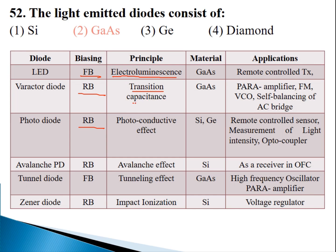Varactor diode works on transition capacitance and uses gallium arsenide. Photodiode operates on the photoconductive effect — converting light energy to electrical energy, which is the opposite of LED — and uses silicon or germanium. Avalanche photodiode uses the avalanche effect, made of silicon. Tunnel diode works on the tunneling effect, made of gallium arsenide. Zener diode uses impact ionization, made of silicon.